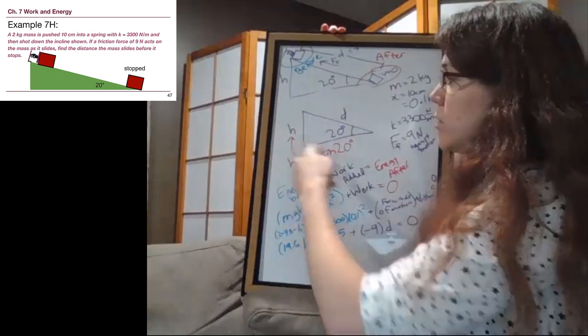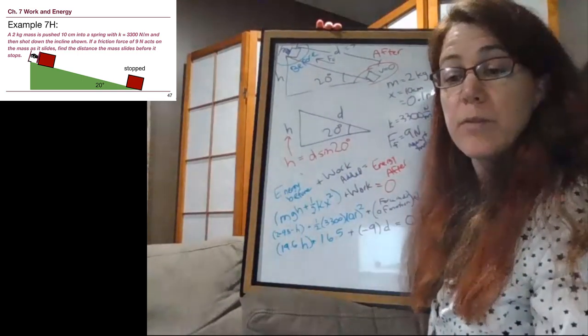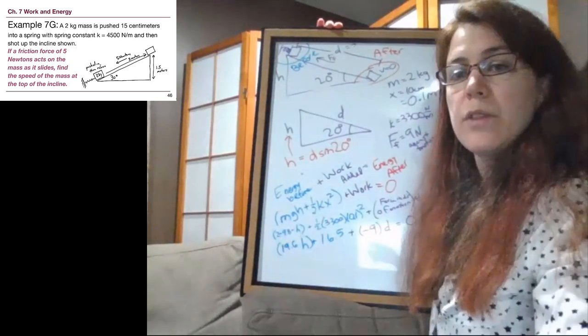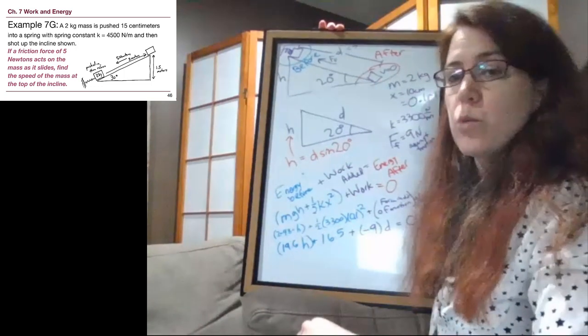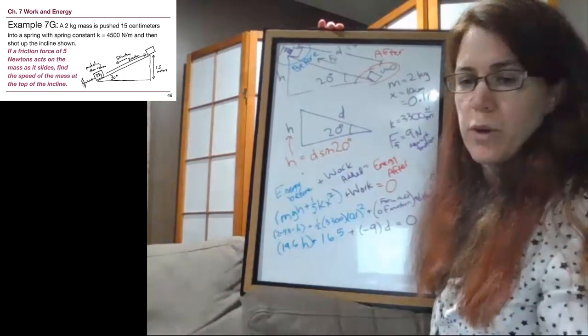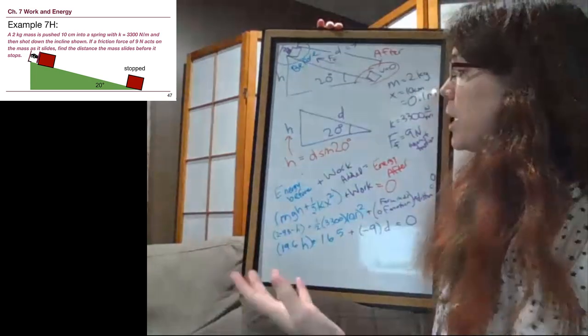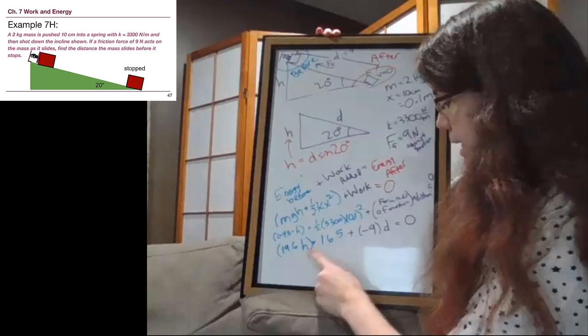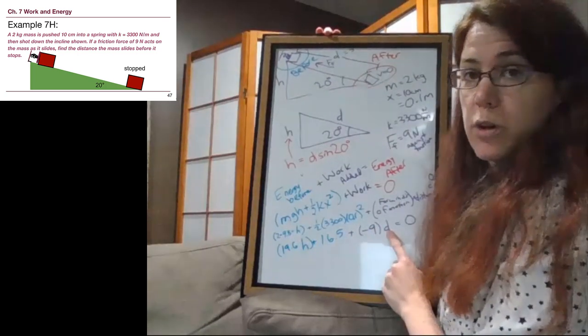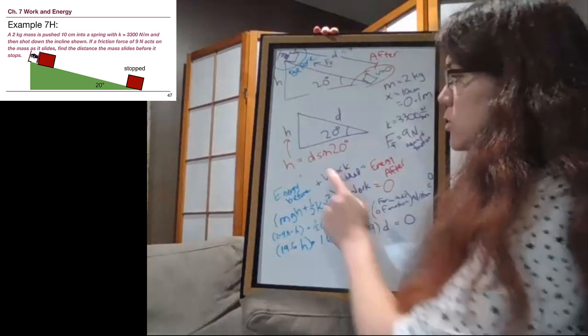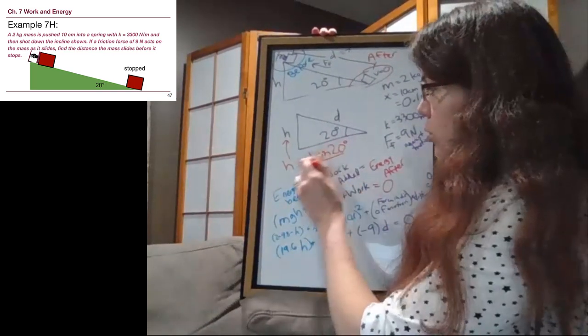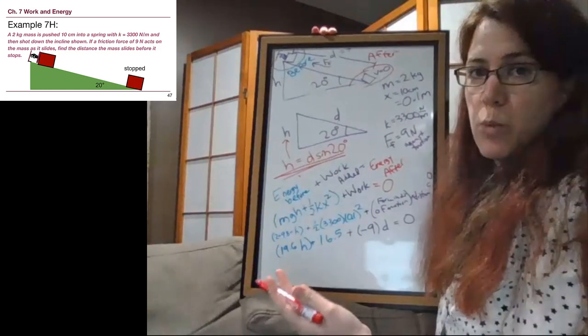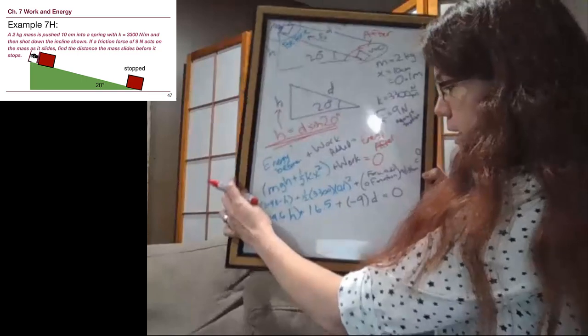The reason the angle shows up in this problem and not the previous one is because in the previous example we were given these two values. We were also given the 30 degree angle, and I'm even going to flip back one slide real quick. Without being given the one point five meters, we could have solved for it. In this situation we have two apparent unknowns, but we can still rewrite H in terms of the unknown that we're asking for, the distance D. That's the only real trick in this problem. This is the only thing that makes this problem a little bit different than any of the others, and now we've seen it and we won't be stuck or confused by it in the future.